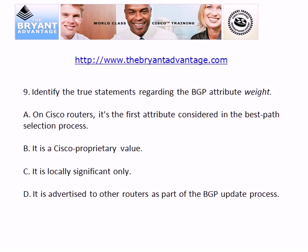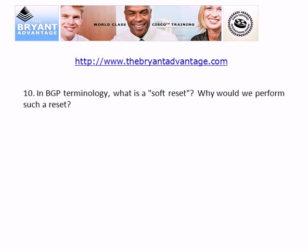For question 9, A, B, and C are true. Weight is the first attribute considered in the best path selection process on a Cisco router. It is Cisco proprietary and locally significant only — it is not advertised to other routers. For question 10, the soft reset: BGP sometimes requires a session to be reset for changes to take effect, but that can require tearing down the existing BGP connection. A soft reset resets that session without tearing the adjacency down.